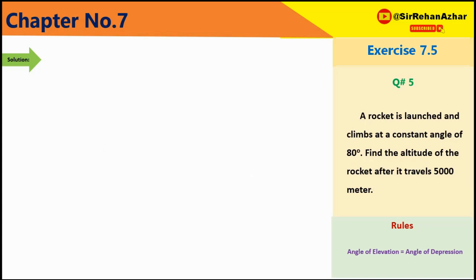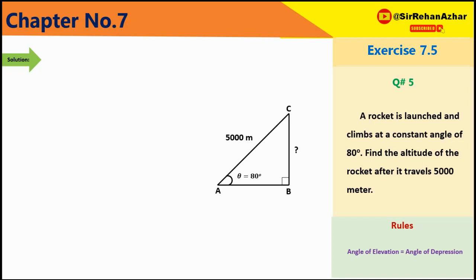Question number 5: A rocket is launched and climbs at a constant angle of 80 degrees. Find the altitude after the rocket travels 5000 meters. Figure draw करते हैं: base AB, height BC, rocket AC direction में move करेगा। Data: BC unknown, AC = 5000 meter, theta = 80 degree।